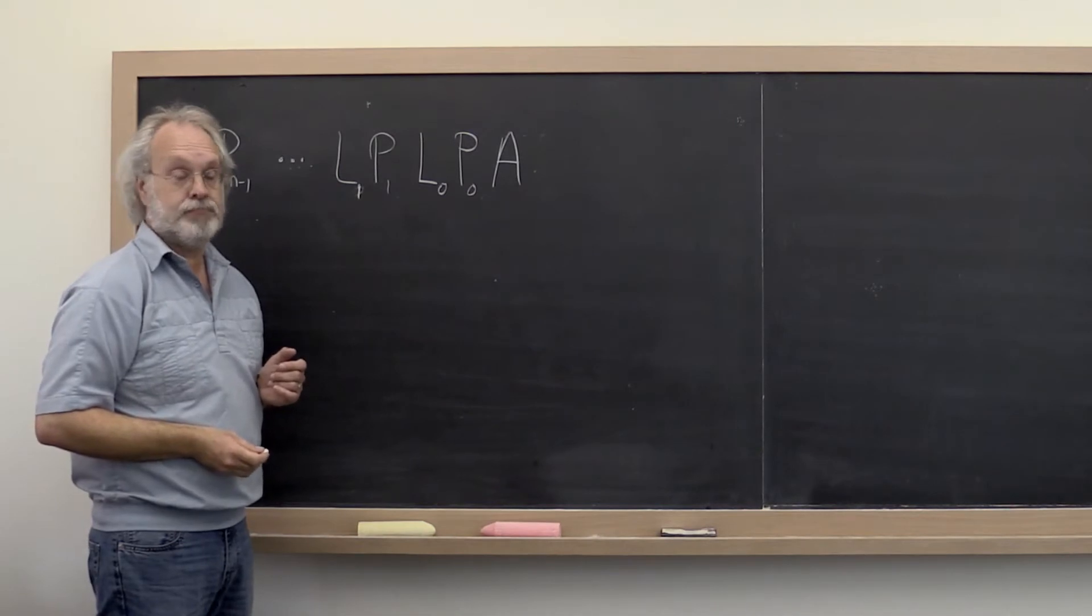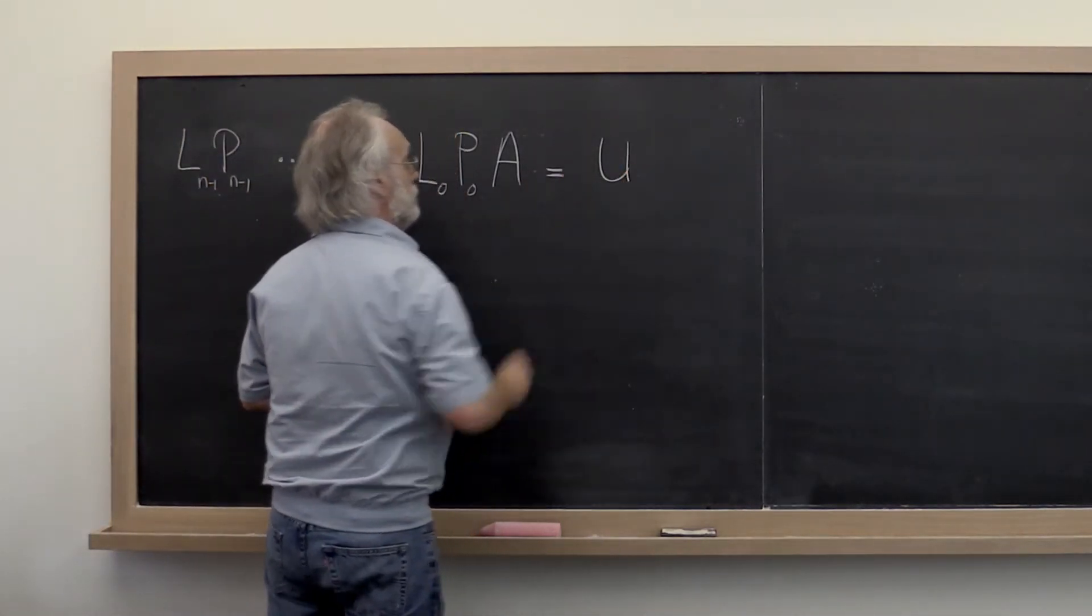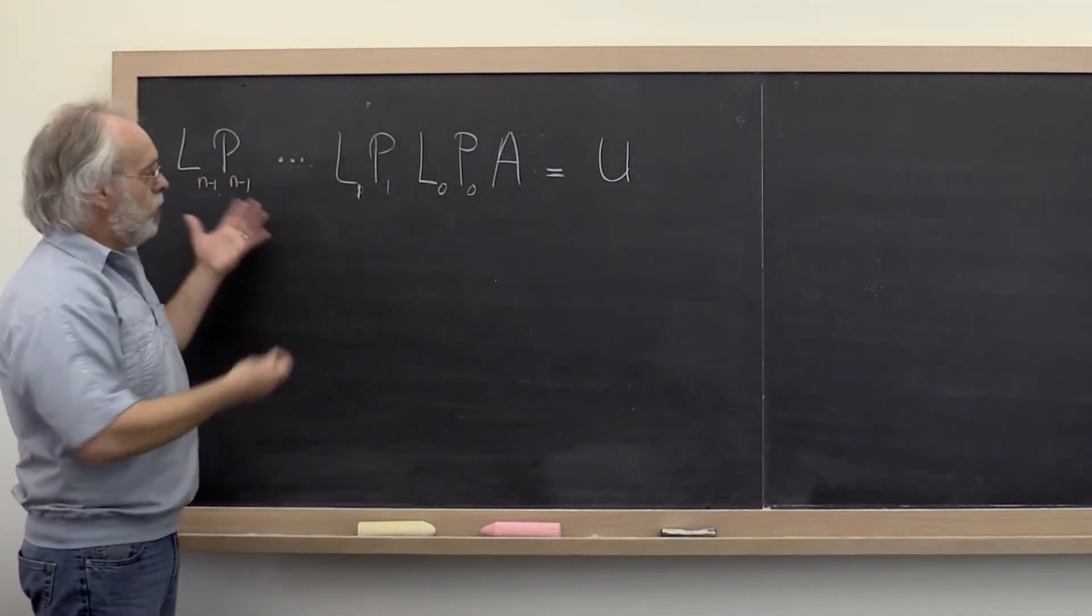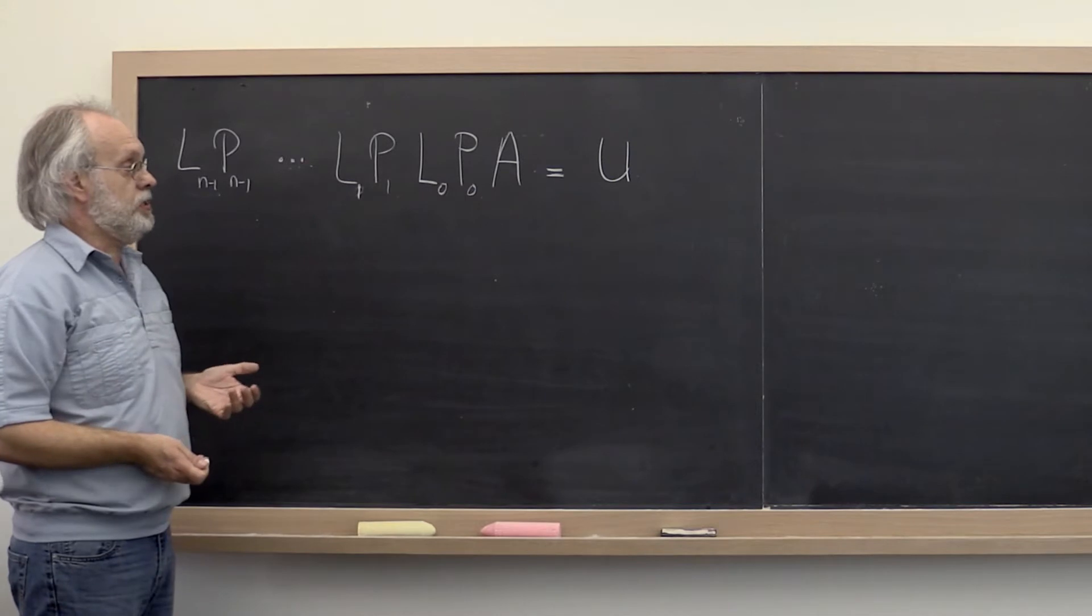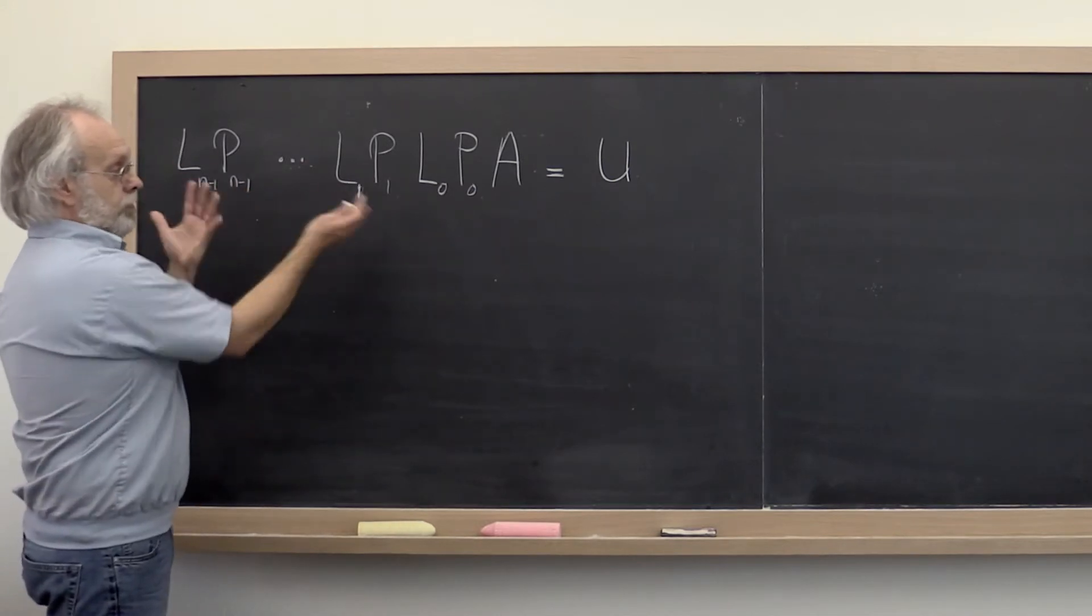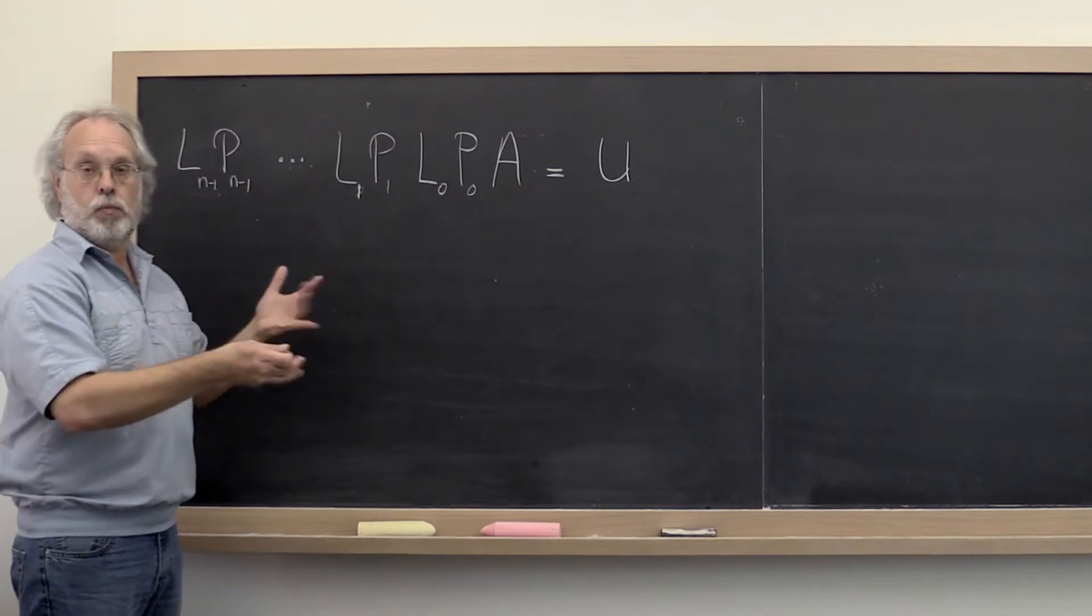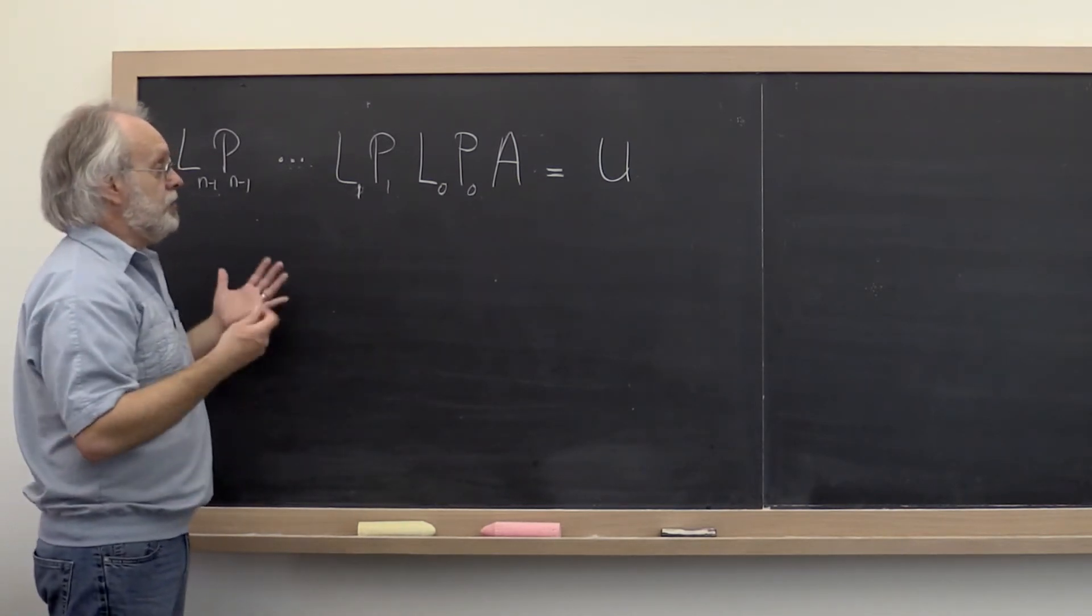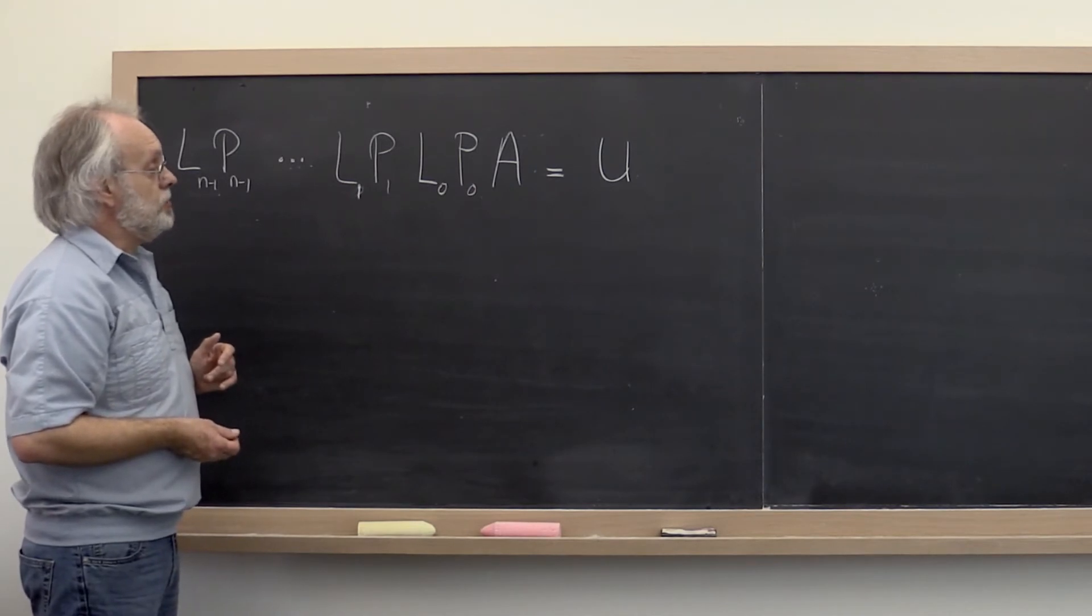Right? And the end result is the matrix U. Now unfortunately it doesn't look like a clean LU factorization because we have all of this interleaving of application of a Gauss transform with the application of pivot matrices, permutations.